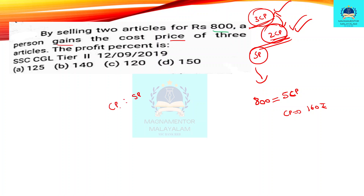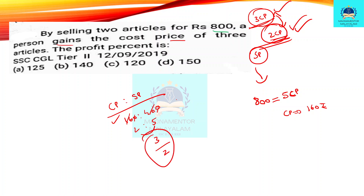Cost price ratio and selling price ratio: cost price is 120, selling price is 1.5. Profit percentage: 1.5 times the cost price gives the selling price, and the profit percentage works out accordingly. Profit percentage is the key result here.